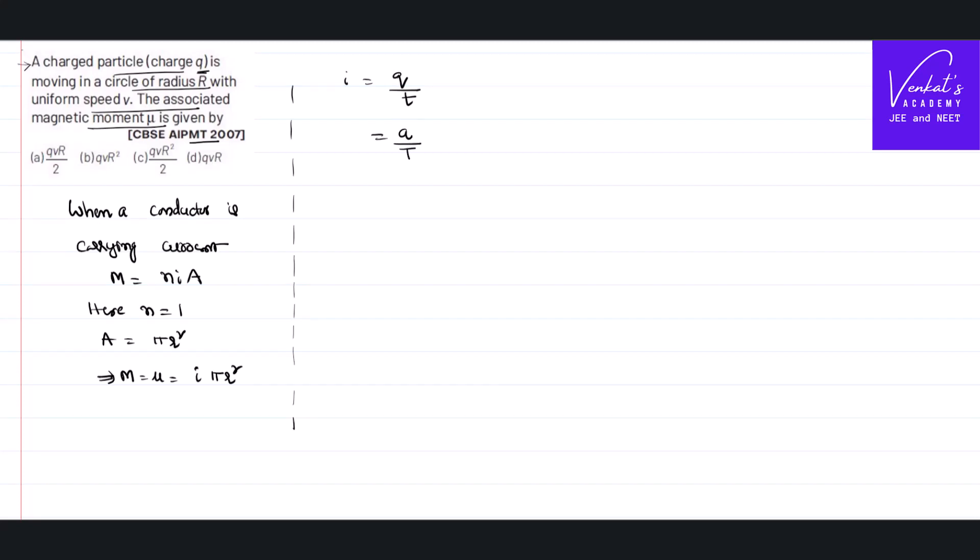time taken to move on rotation is called as time period. That is q by time period and 1 by time period can be expressed as frequency. So, q into frequency where N is frequency.